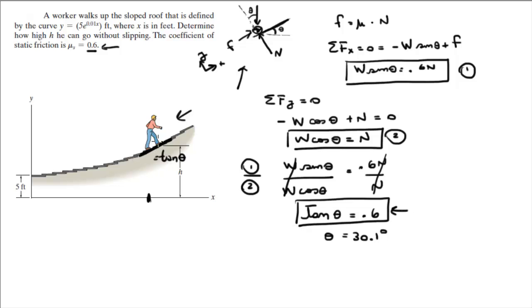So we know the function, we know the slope, and we're trying to find the point. So what you do is when you have these conditions, you do the derivative of the function. The derivative of the function is equal to the derivative of 5e to the 0.01x dx, which is equal to 0.05e to the 0.01x.